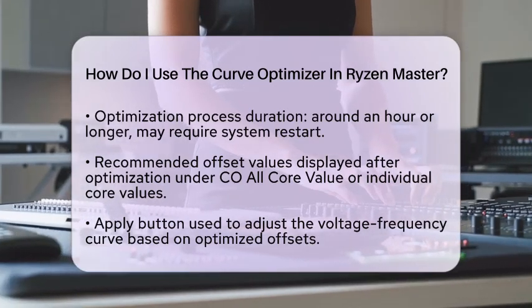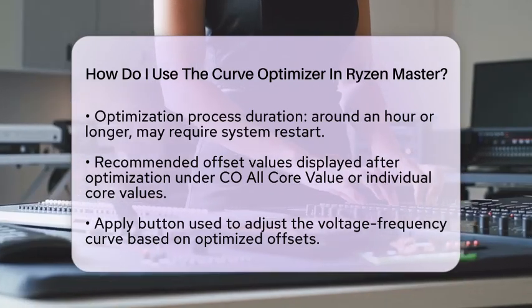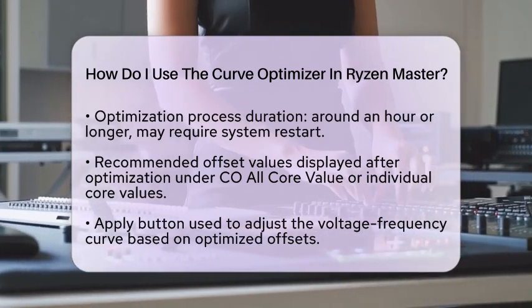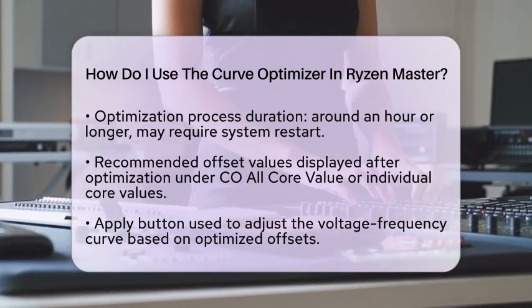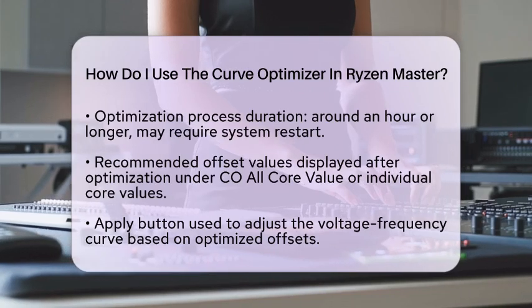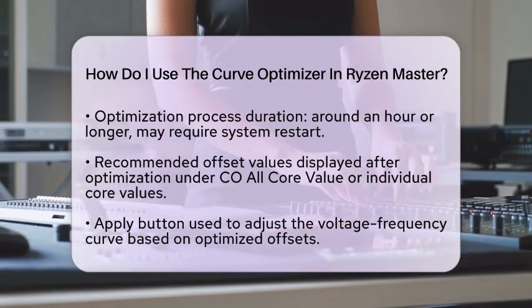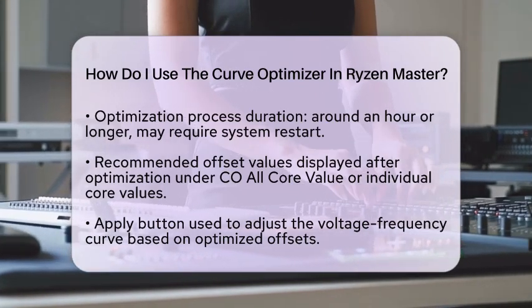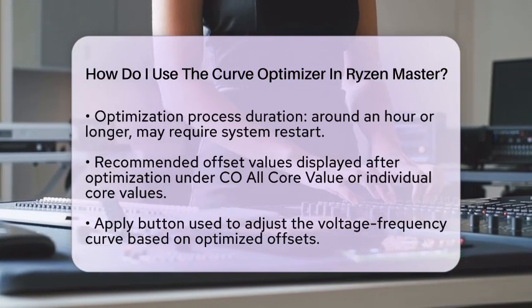This action will adjust the voltage frequency curve based on the optimized offsets. If you want to fine-tune the offsets further, you can manually enter negative values — such as negative 5 or negative 10 — to reduce the voltage. However, be cautious with this step. Too aggressive undervolting can lead to system instability. It is best to start with mild negative offsets and check your system's stability afterward.